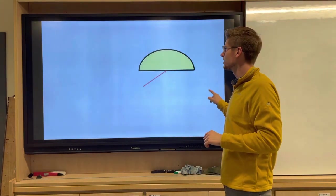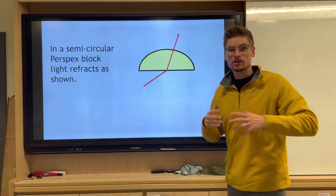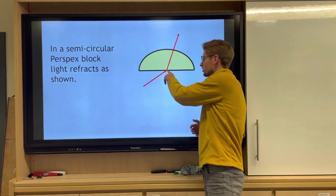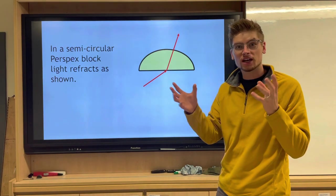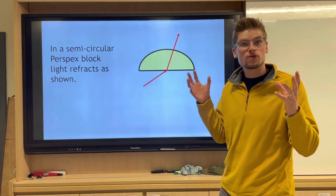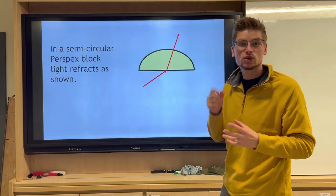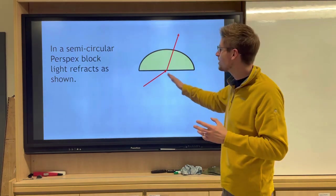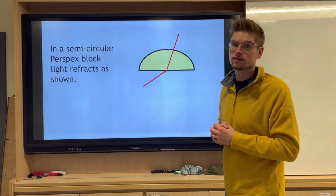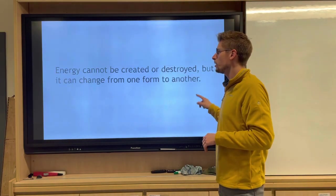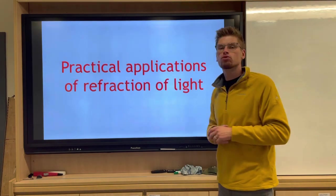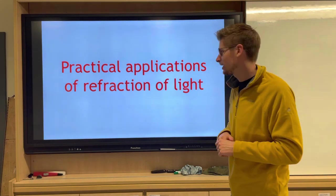And lastly, when we have some sort of semicircular block, again look, it changed direction where one material meets another material. So refraction is the change in direction from when light travels from one material to another. You can see that every time we've done this, light is only traveling in straight lines. Let's look at some practical applications on the refraction of light.